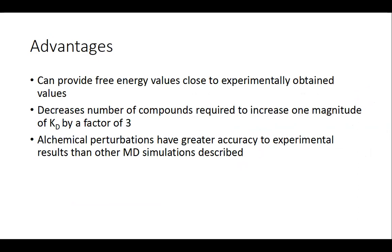Alchemical perturbations and molecular dynamics in general can provide free energy values relatively close to experimentally obtained values. It can decrease the number of compounds — the number of leads you would need to synthesize — by a factor of three. Alchemical perturbations have been shown to have better accuracy compared to experimental results than some other molecular dynamic simulations previously mentioned, such as steered and umbrella sampling.